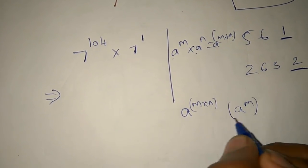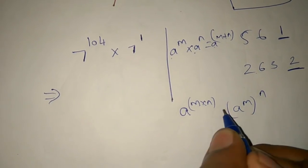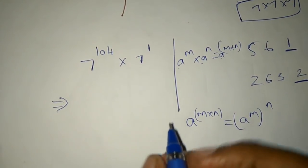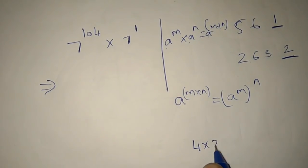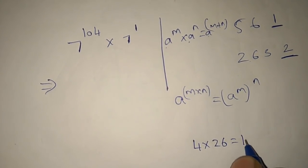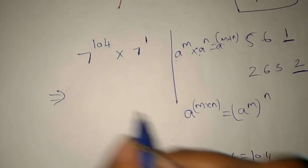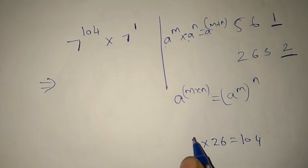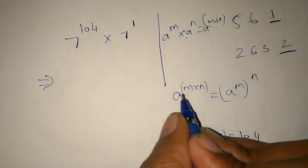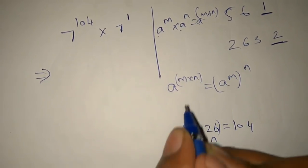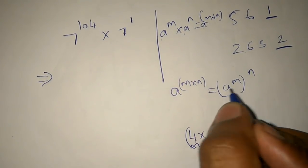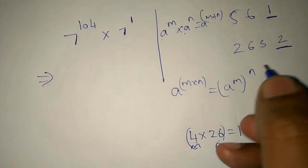A power m, 1 power n. So the 1 out of 4 we will write as 4 into 26. So 4 into 26 is 1 out of 4. In the 4 into 26, this is m and this is n. So a power m into n — this is m into n. This is a power m all power n.